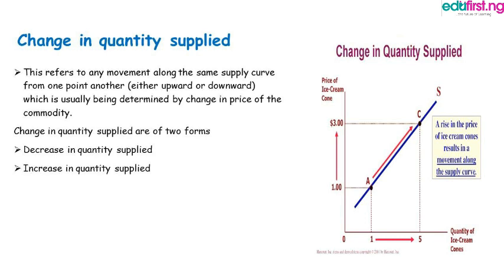Additional factors include (8) the price of the commodity, (9) seasonal variations, and (10) government policies. Change in quantity supplied refers to any movement along the same supply curve from one point to another, either upward or downward, determined by a change in the price of the commodity. It takes two forms: increase in quantity supplied and decrease in quantity supplied. For example, an increase in the price of an ice cream cone from one dollar to three dollars resulted in an upward movement along the supply curve from point A to point C, and an increase in quantity from one to five.